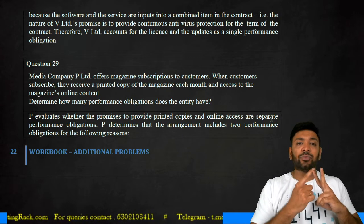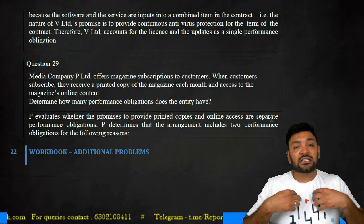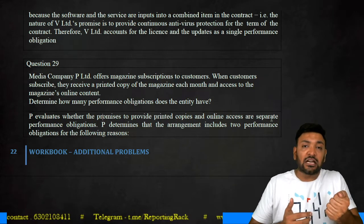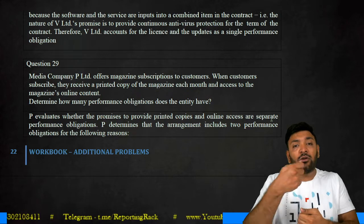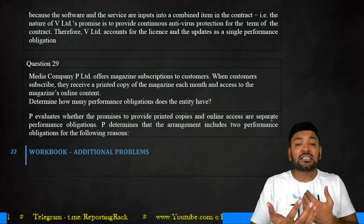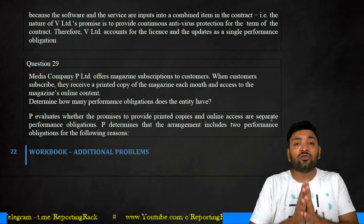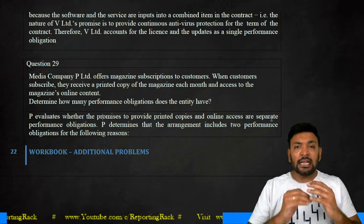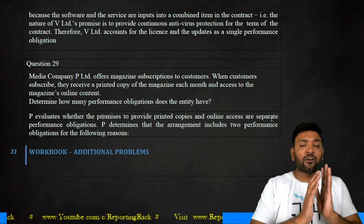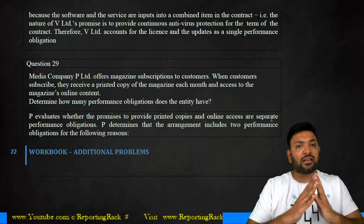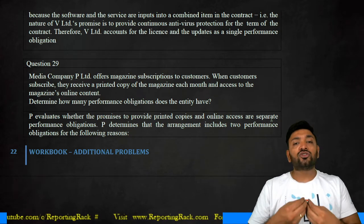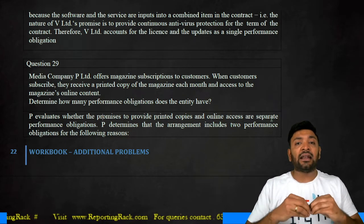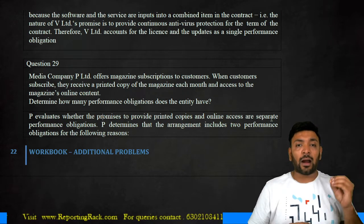Each of these obligations benefits the customer by itself — the online copy does not require the physical document to derive benefit, and the physical copy does not require the online content. Therefore, both are distinct in providing benefit to the customer. They are also completely independent; there is no significant integration and they do not modify each other's content. Both the online copy and the printed copy should be treated as separate performance obligations under Ind AS 115.